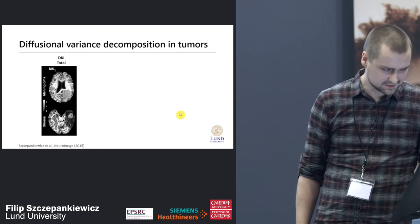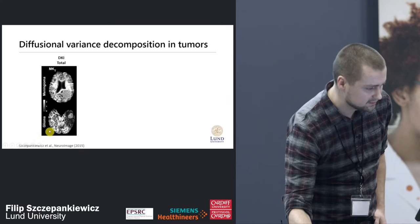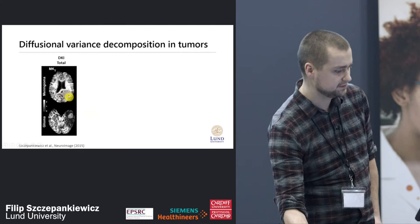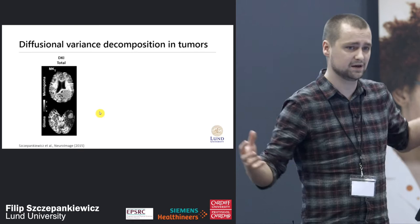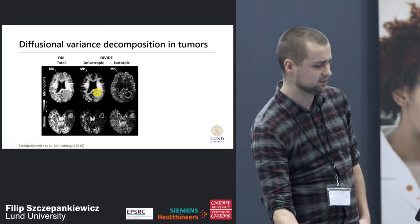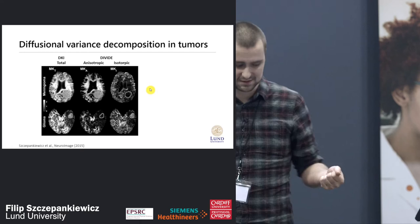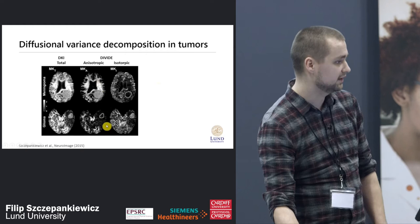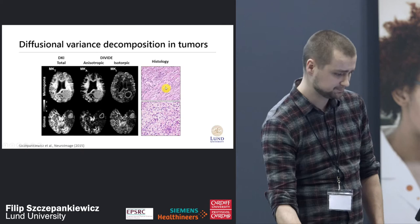We tested this in tumors — a very instructive case. We have a meningioma in the top row and a glioma. We can see that the variance is high in both tumors, but we can't say why other than that they are heterogeneous. Using diffusional variance decomposition, however, we see a huge difference: the meningioma has a high anisotropic component and a low isotropic component, whereas the glioma is exactly the other way around. From this measurement alone, we would predict something anisotropic in the meningioma and no anisotropy in the glioma — and that's exactly what we observed when examining the resected tissue samples. This was indeed a fibroblastic meningioma, which is very anisotropic.